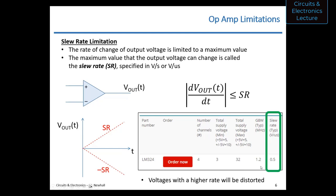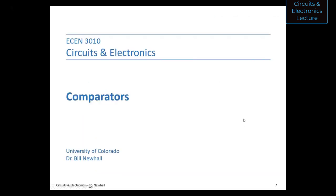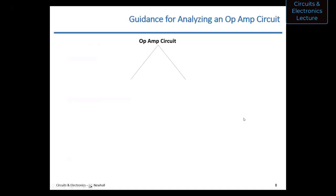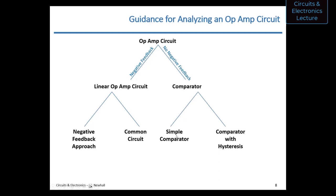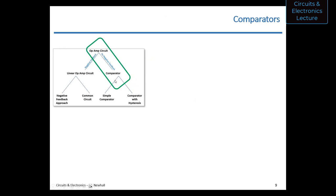Those are the limitations of an op amp that are practical if you're trying to build an audio amplifier, drive a high-power device, or output a large voltage signal. The output voltage swing limitation is what we're going to use in the design of comparators. Let's go down the right side of that decision tree — the simple comparator first, then the comparator with hysteresis.